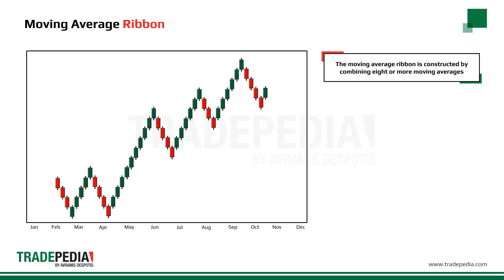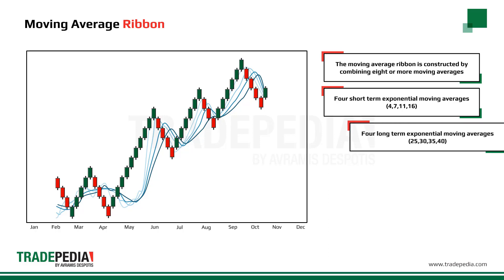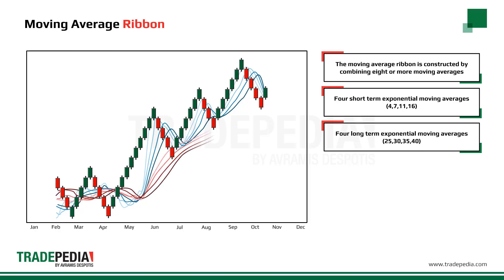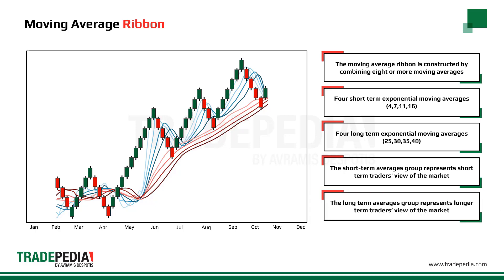The Moving Average Ribbon is constructed by combining 8 or more moving averages, capturing a variety of different time cycles. A popular combination is to use 4 short-term averages — the 4, 7, 11, and 16-period exponential moving averages — and 4 long-term averages — the 25, 30, 35, and 40 exponential moving averages. The short-term averages group represents short-term traders' view of the market, while the long-term averages group represents longer-term traders' view of the market.